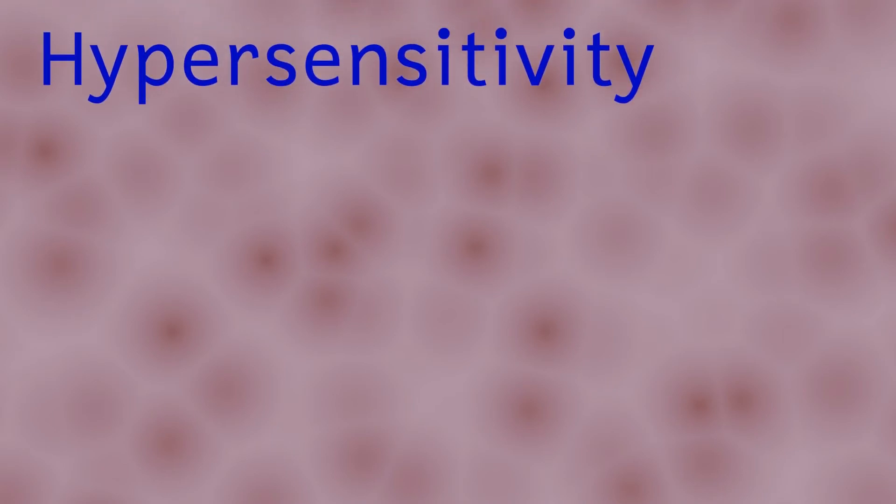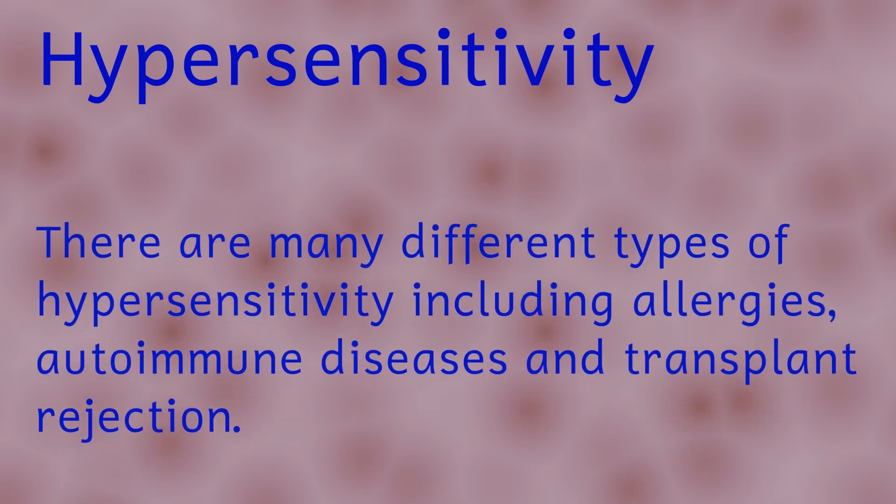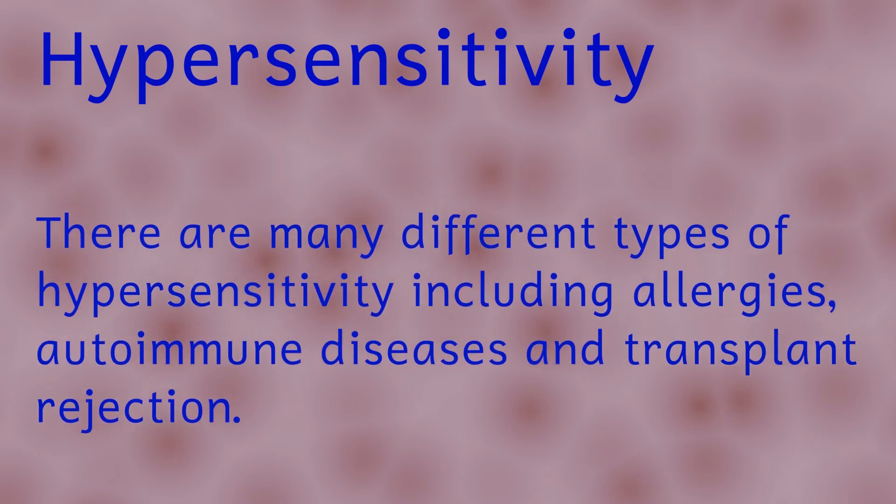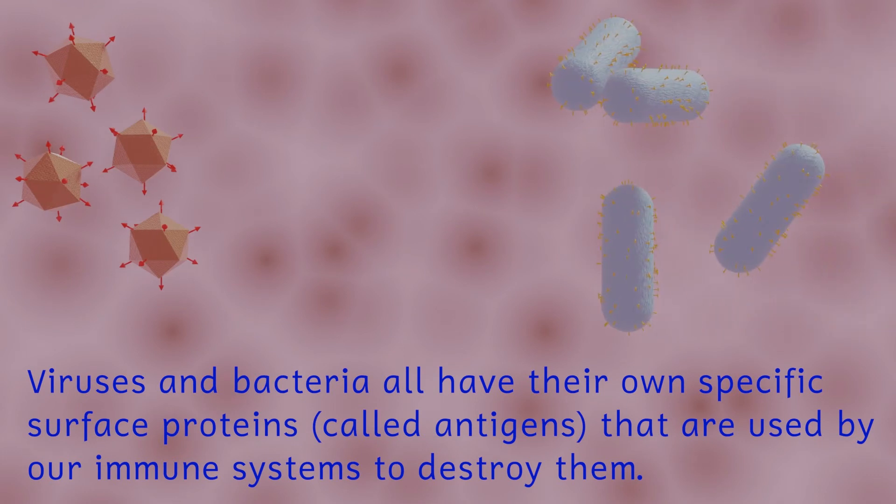So why do we have allergies at all? After all the immune system is supposed to help us not potentially kill us. Allergies are part of an immune system response called a hypersensitivity. This means that the immune system is responding to substances that it isn't meant to. The IgE antibodies are actually supposed to help to protect us against parasitic infections. That's why one of the symptoms of an allergic reaction is itchiness. If the system was indeed responding to a parasite, the itching would cause us to scratch, hopefully removing the parasite from our skin. In fact in regions of the world where parasitic infections are still common, it's found that allergies are much less frequent than in places without as many parasitic infections.